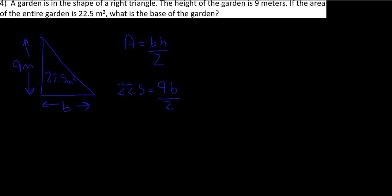So what I'm going to do here is I'm going to multiply by two in order to get to that b. So multiply by two on this side and multiply by two on this side. So 22.5 multiplied by two is going to be equal to 45. Then we have 9b. So I'm going to go ahead and divide by nine here and divide by nine here.